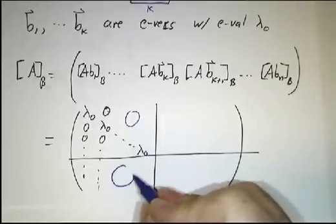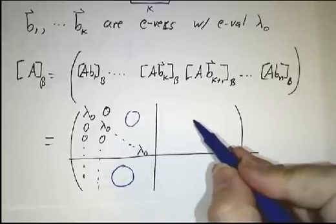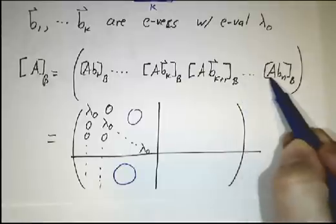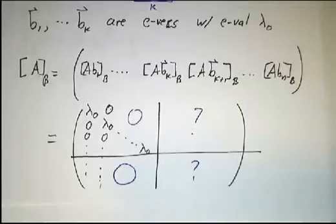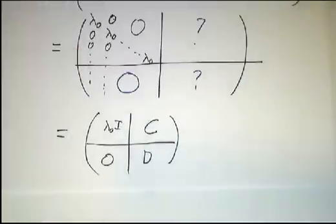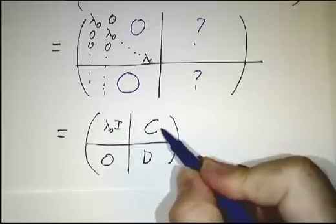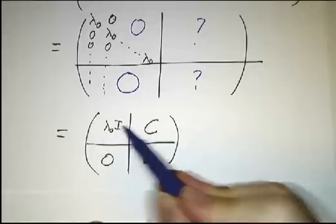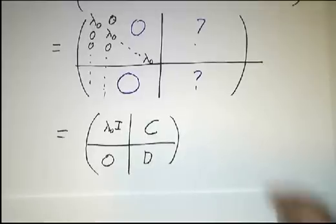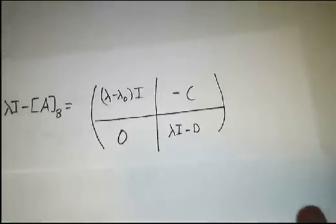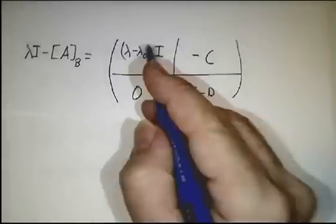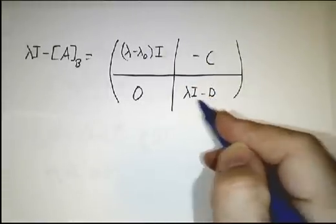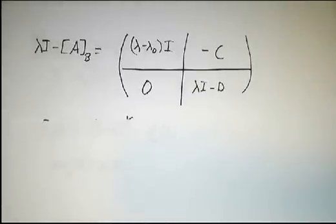What do we get in the upper right corner or in the lower right corner? We have no idea, because we don't know anything about vectors bₖ₊₁, bₖ₊₂, and so on — they could be anything. So let's name those unknown blocks: we'll call whatever appears in the upper right submatrix C, and whatever appears in the lower right submatrix D. Now if you take λ times the identity minus that block matrix, you get (λ − λ₀) times the identity in the upper left, 0 in the lower left, −C in the upper right, and λI − D in the lower right. Then you take the determinant of that to get the characteristic polynomial.